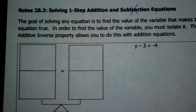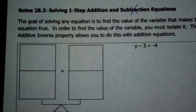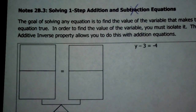First off, the goal of solving any equation — because we're going to be solving all kinds of equations in this chapter — is to find the value of the variable that makes the equation true. In order to find the value of the variable, you have to isolate it. That means it needs to go in timeout all by itself on one side of the equal sign. The additive inverse property is what will allow us to do this today with addition equations.